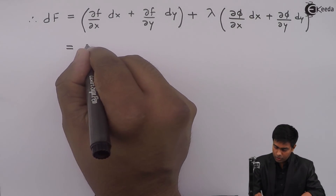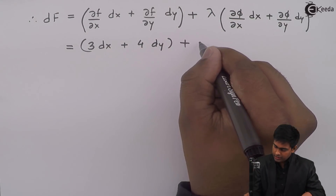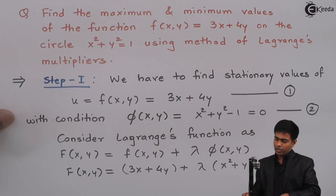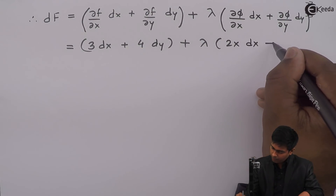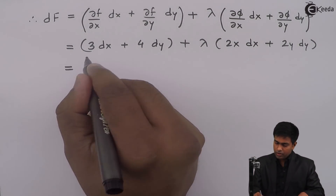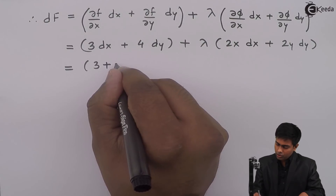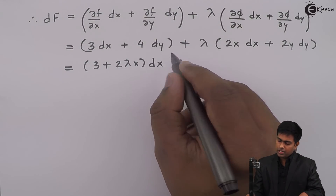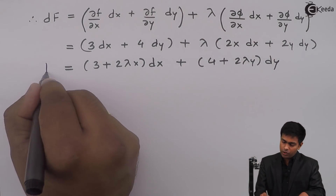So dF = 3dx + 4dy + λ(2x·dx + 2y·dy). By solving this we get (3 + 2λx)dx + (4 + 2λy)dy as the value of dF.